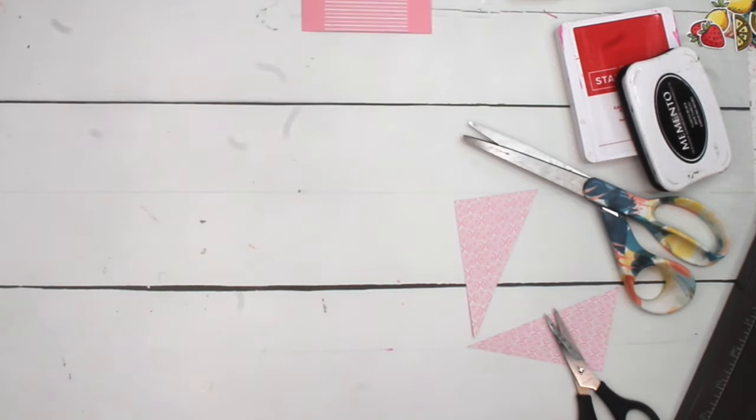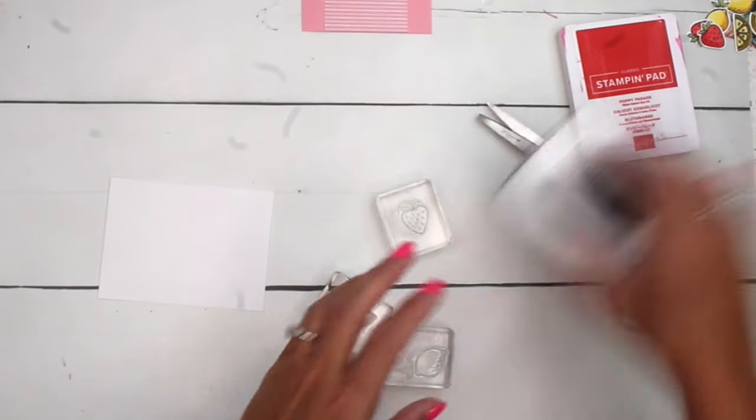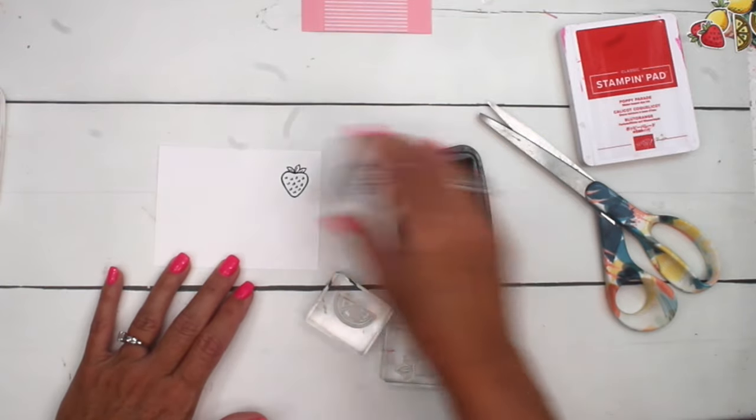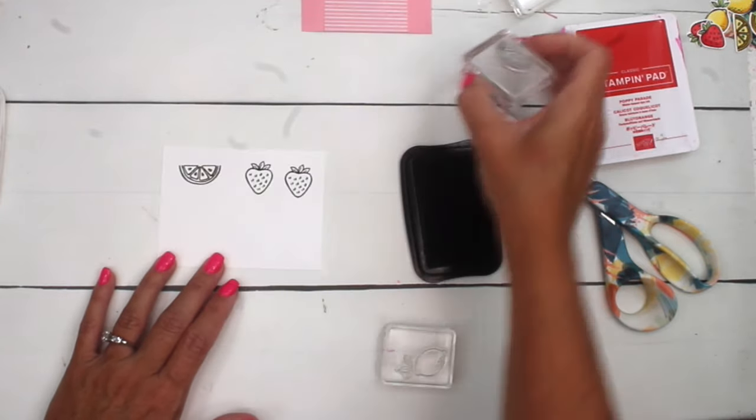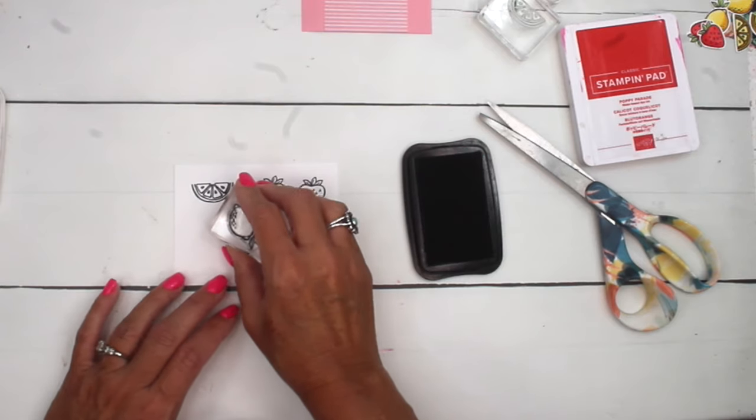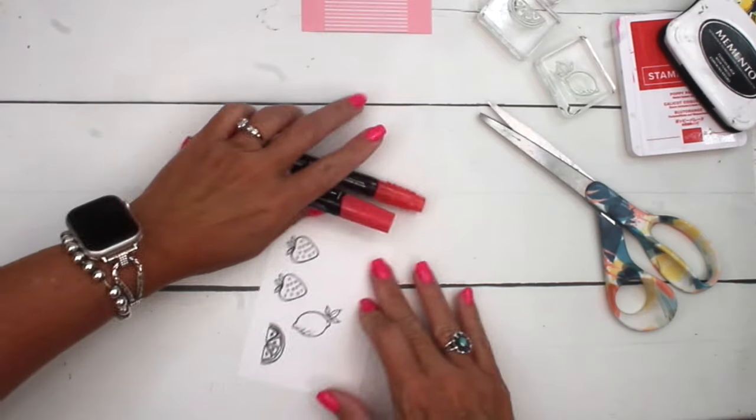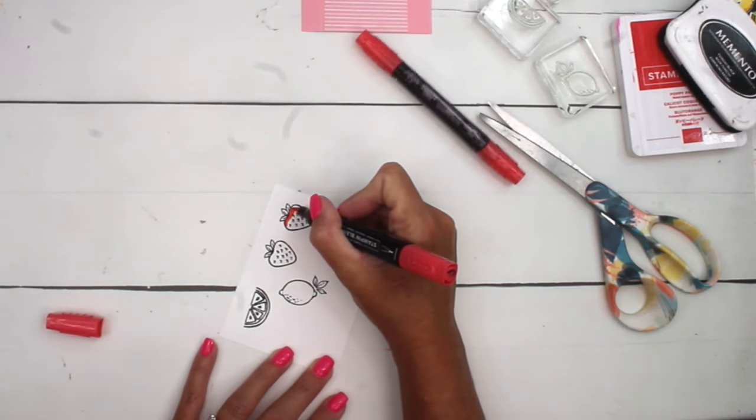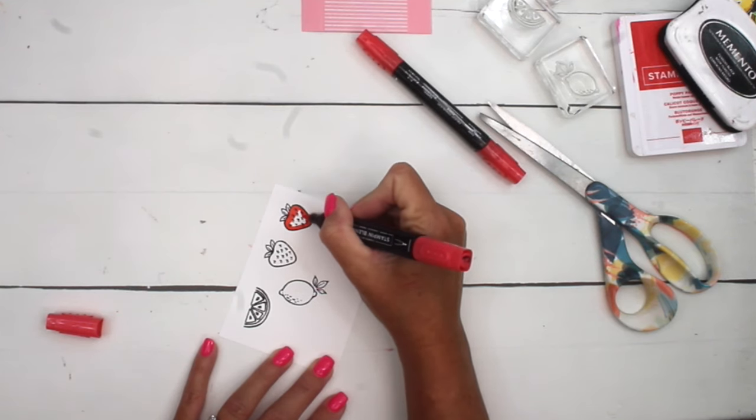While we wait for that, we will stamp our fruits. We are going to stamp both lemons and the strawberry in Memento Black. And I'm actually going to stamp the strawberry twice. And then I'm going to do the lemon and the other lemon. I am using Stampin' Blends to color these. I'm going to start with my light Poppy Parade Stampin' Blend. And I'm going to give my strawberry a full coating of ink.